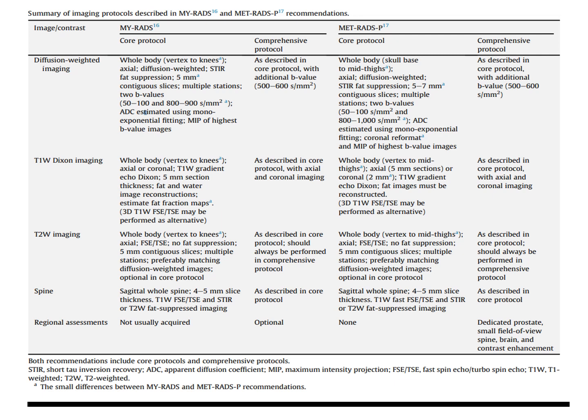Both myRADS and METRADS have a core protocol and a comprehensive protocol. The sequences used include: first, diffusion weighted imaging, using both low and high B values with at least two different B values, 5 mm slices, echo planar imaging, and good fat suppression for quality DWI images. Next is T1-weighted Dixon imaging, where fat and water image reconstructions are performed. Then T2-weighted imaging without fat suppression, sagittal whole spine images, and optional regional assessments.